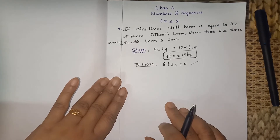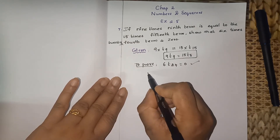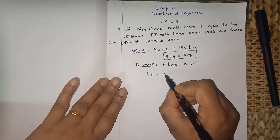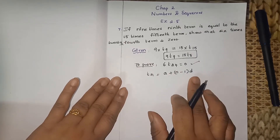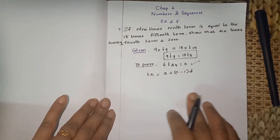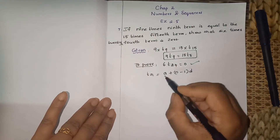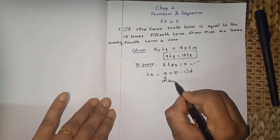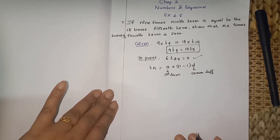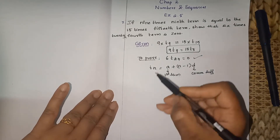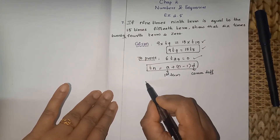So how do we find this? This given condition is the only hint. You know the nth term of an AP formula: tn equals a plus (n minus 1) into d, where a is the first term and d is the common difference. They didn't give specific values for a and d, so we use them as they are. Now using this formula with the given hint.